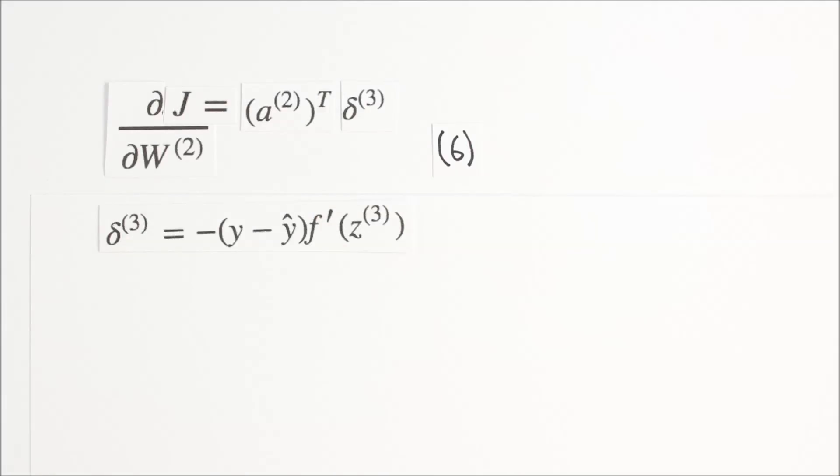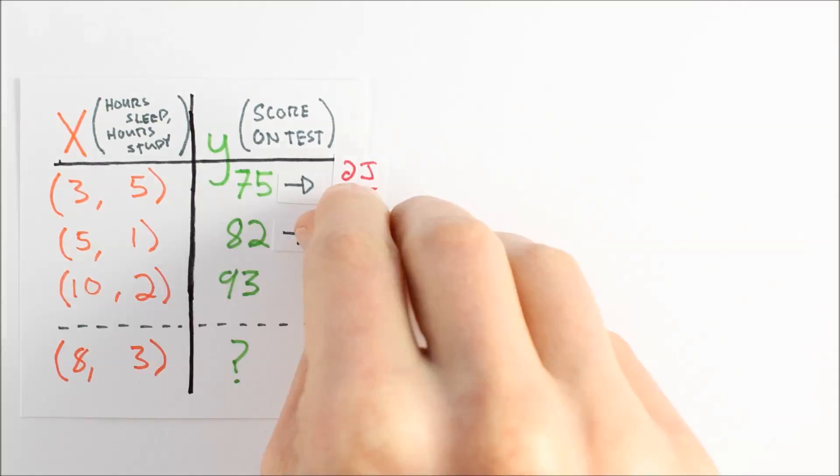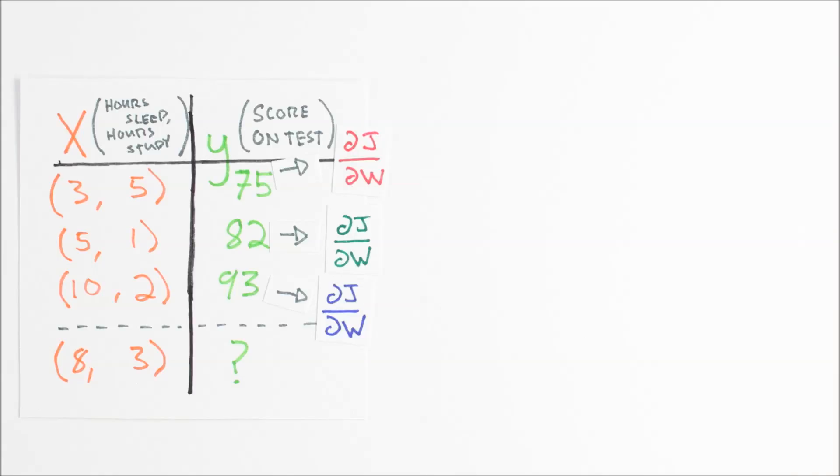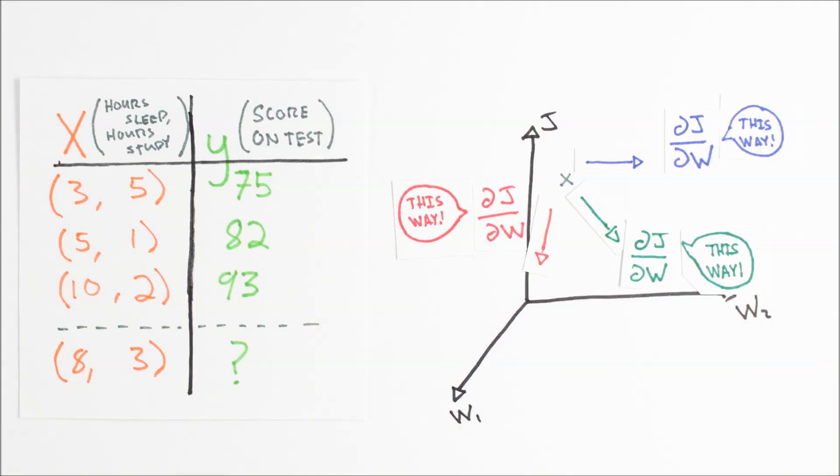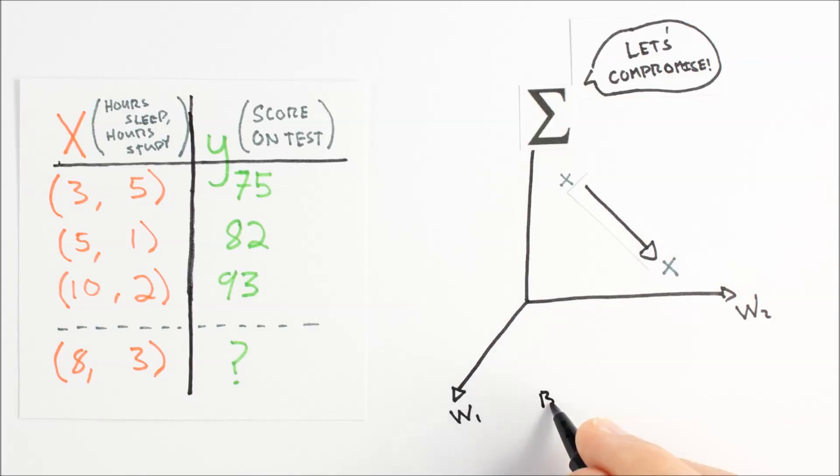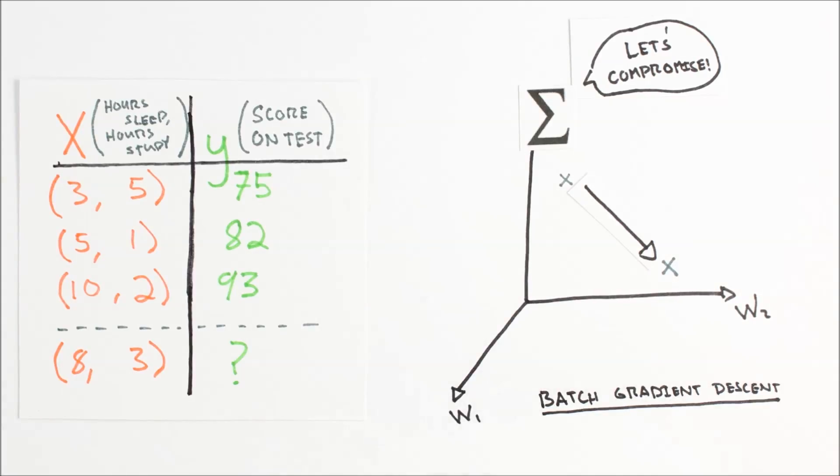Another way to think about what's happening here is that each example our algorithm sees has a certain cost and a certain gradient. The gradient with respect to each example pulls our gradient descent algorithm in a certain direction. It's like every example gets a vote on which way is downhill, and when we perform batch gradient descent, we just add together everyone's vote, call it downhill, and move in that direction.